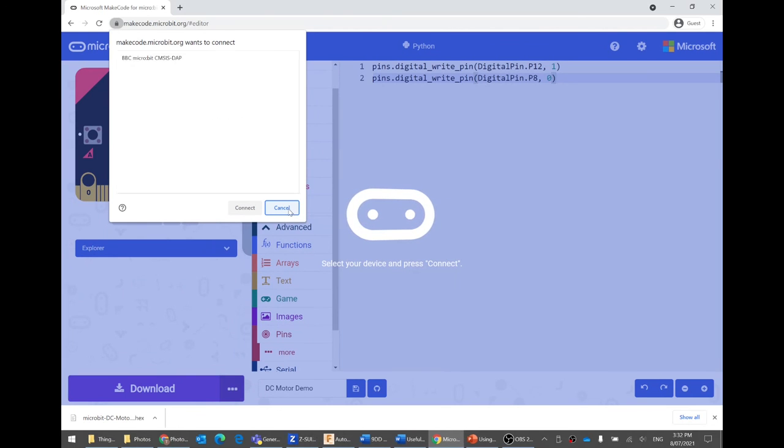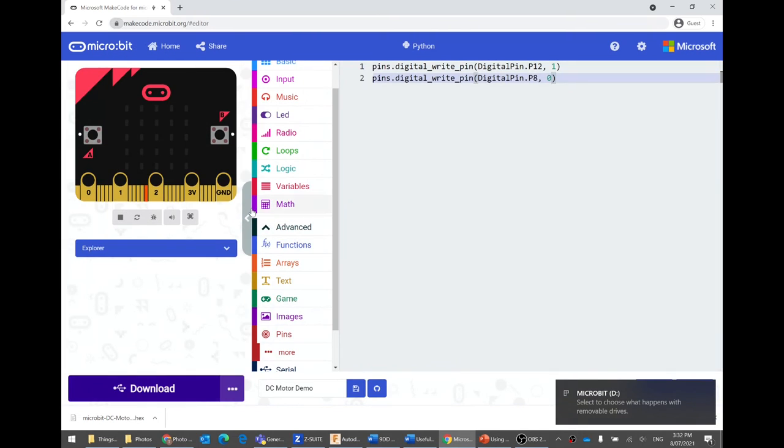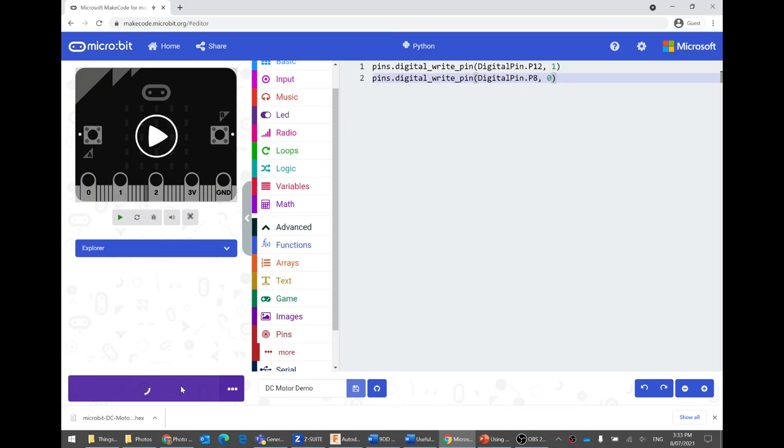If I plug this micro USB cable into the micro bit, pair device. Yay. Then it comes up there. I can connect. It'll take a little bit. Just give it a few seconds to think. And then you can download. And it will be on your micro bit.